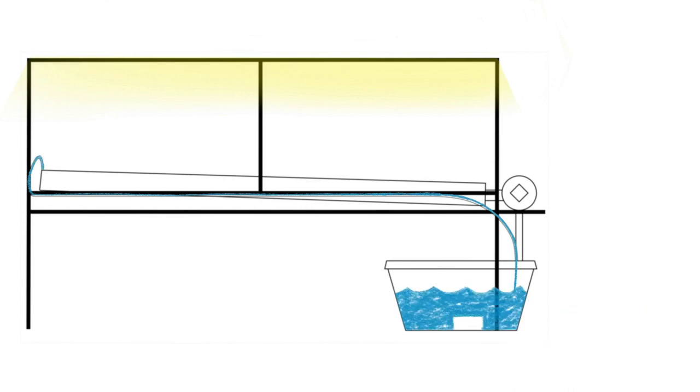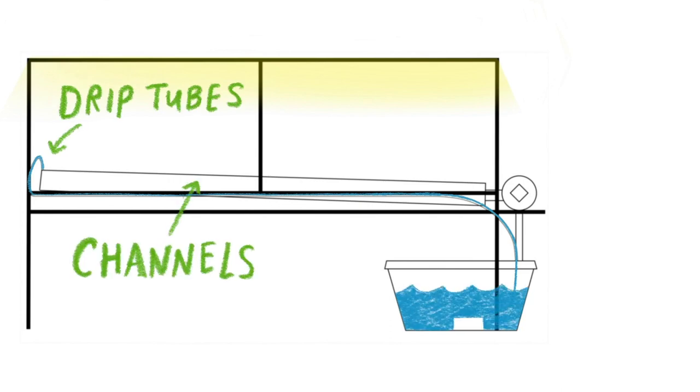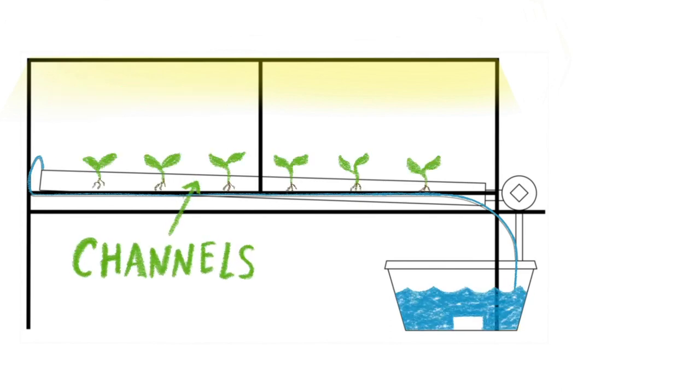At the top of the NFT, smaller drip tubes connect to the NFT channels. The channels are long, shallow, and hollow.